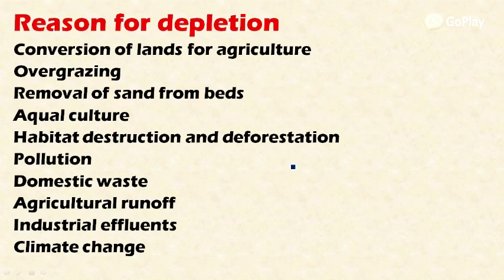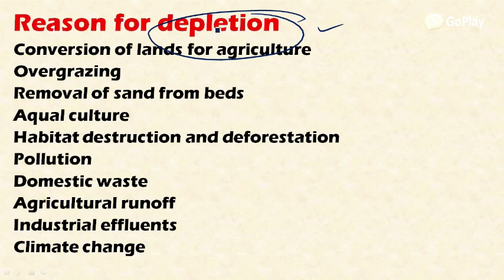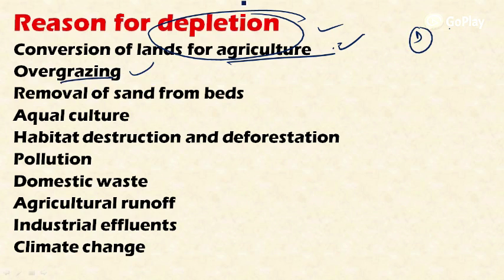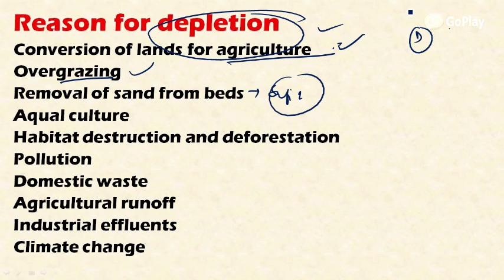There are various reasons why wetlands are being depleted. These include: conversion of wetland land for agricultural purposes through encroachment, overgrazing of cattle, and removal of sand from the beds — the sand mafia, which is very prevalent in India. Removal of sand from wetlands destabilizes the ecosystem and degenerates the wetland itself.